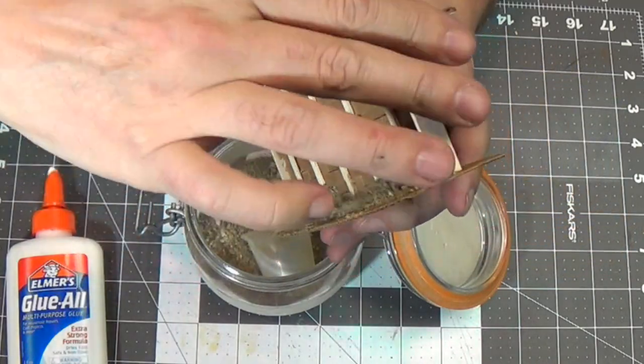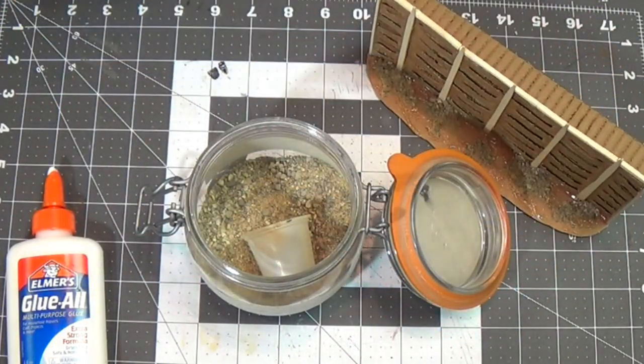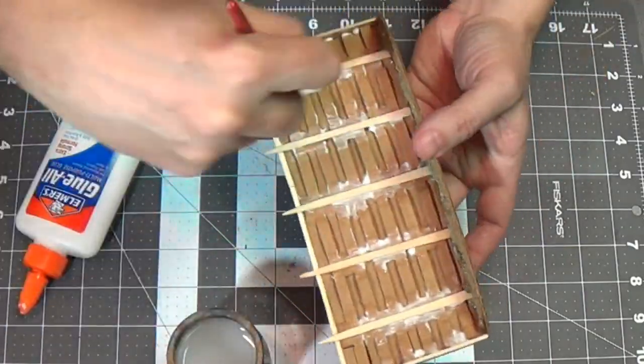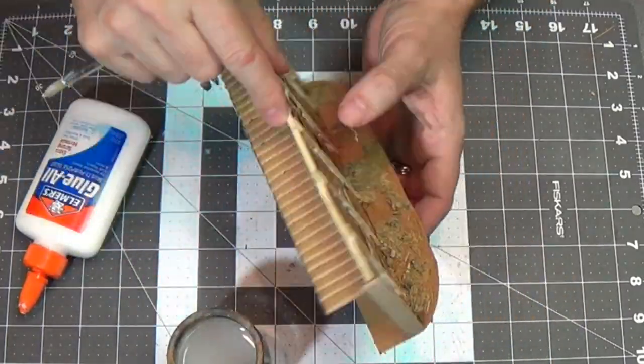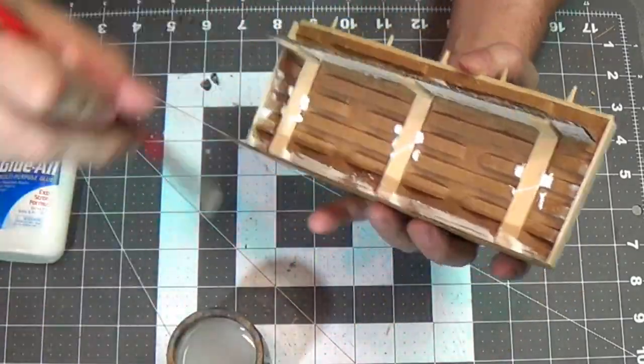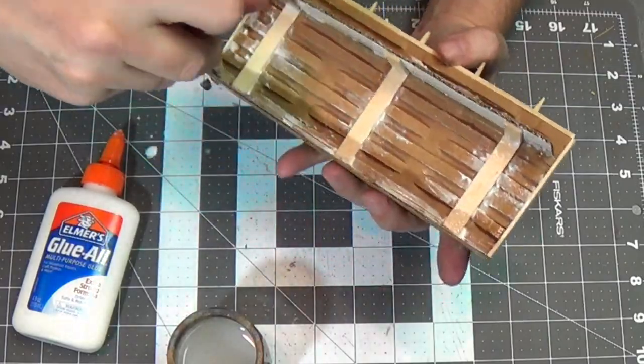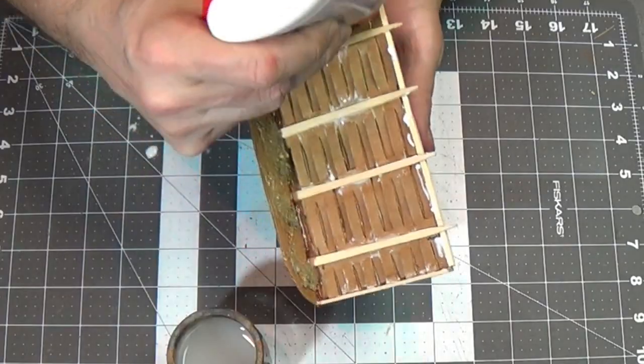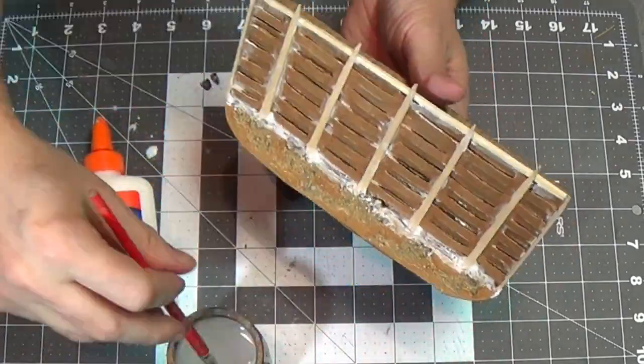Now that's all dry, just pour the excess back in my container here. Now I'm going to hit it with some white glue. This will just kind of strengthen it, but also make sure all the components are nice and attached. And just kind of water the brush down a little bit and then spread the glue out. So I'm just making sure all the components are not coming off there.